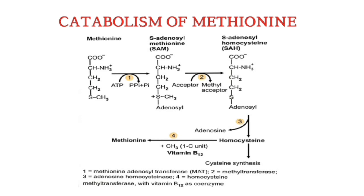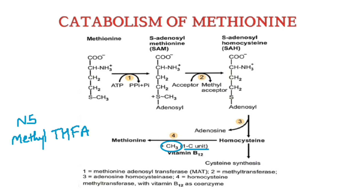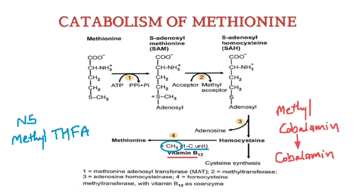Homocysteine can follow two pathways. One is resynthesis of methionine, and the other is synthesis of cysteine. In the first pathway, homocysteine receives a methyl group donated by the one-carbon pool, which is mainly N5-methyl tetrahydrofolic acid. Vitamin B12 plays a critical role in this process. The methyl group is first transferred to cobalamin to form methylcobalamin, and then to homocysteine to form methionine.